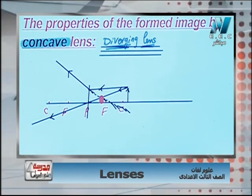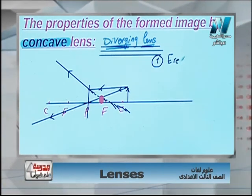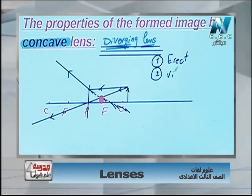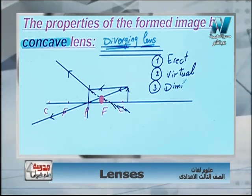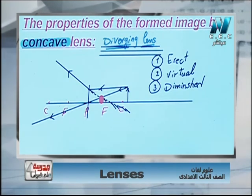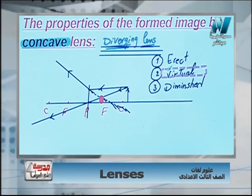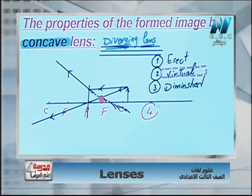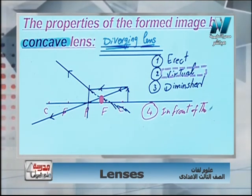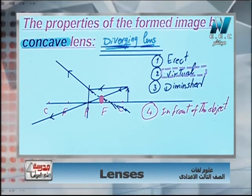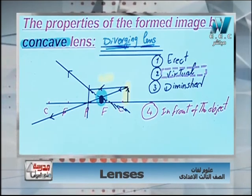The properties of the image formed by a concave lens: number one — erect; number two — virtual, cannot be received on a screen; number three — diminished. Since the image is virtual, its position is described relative to the object: the image is in front of the object.